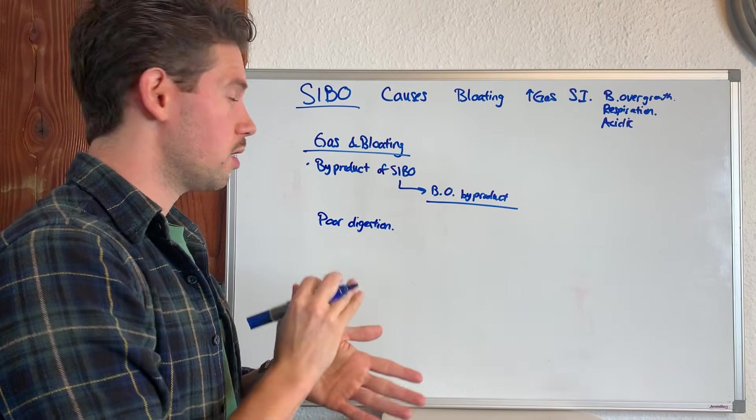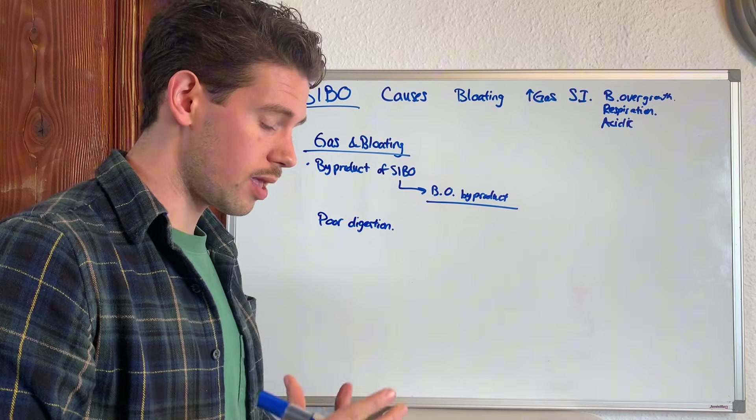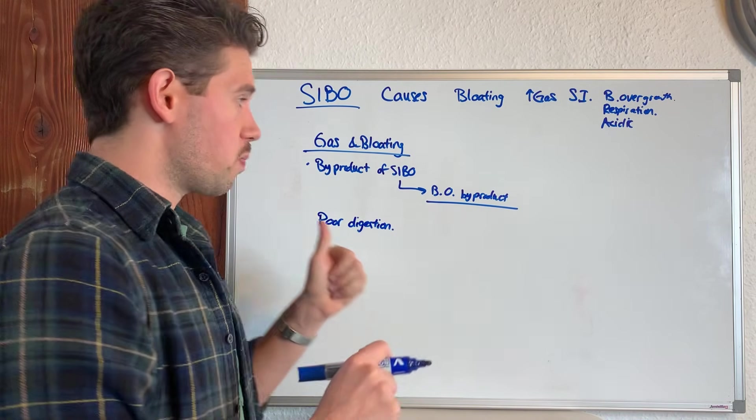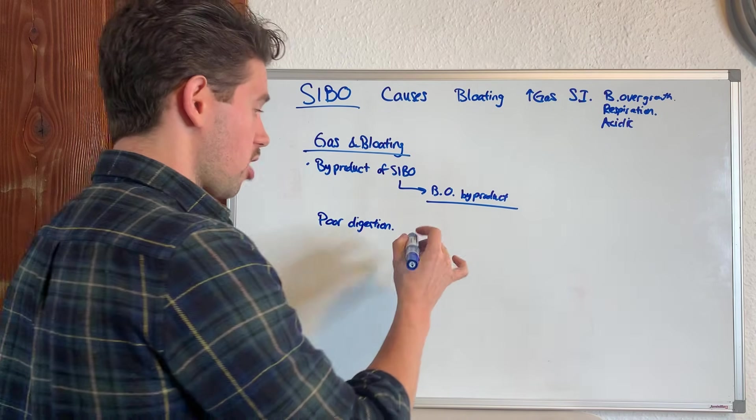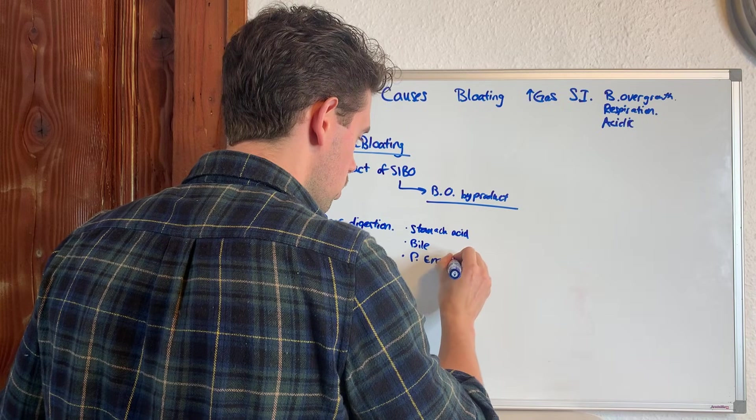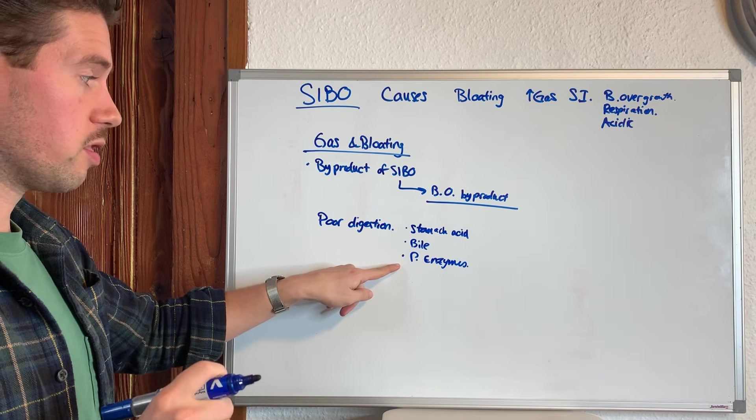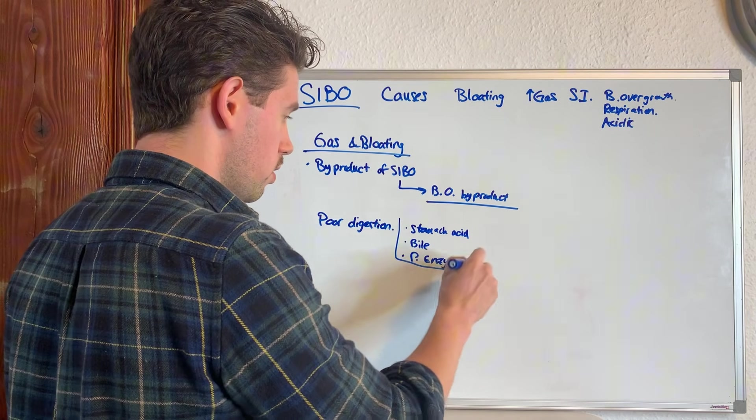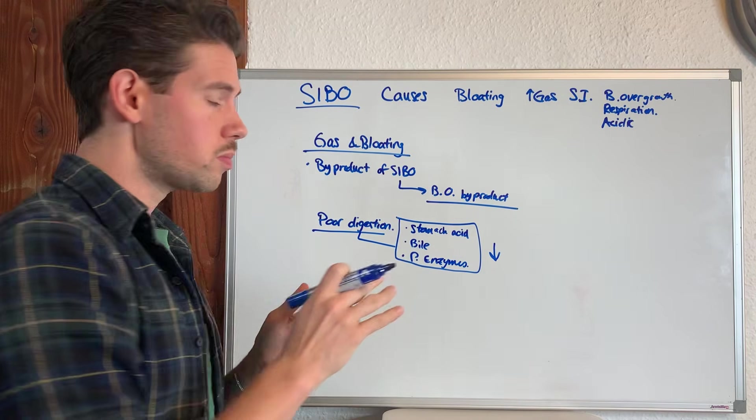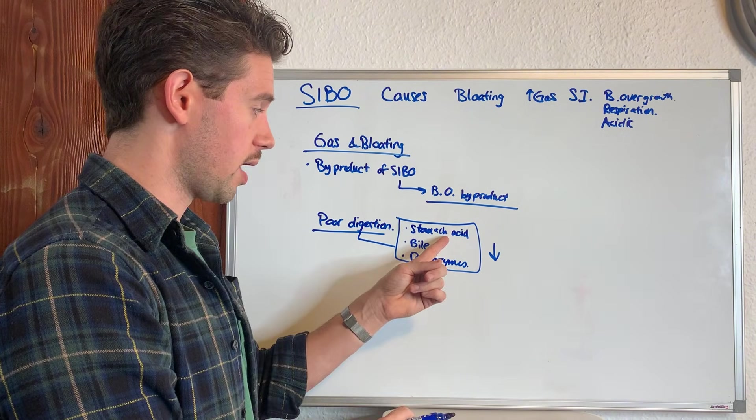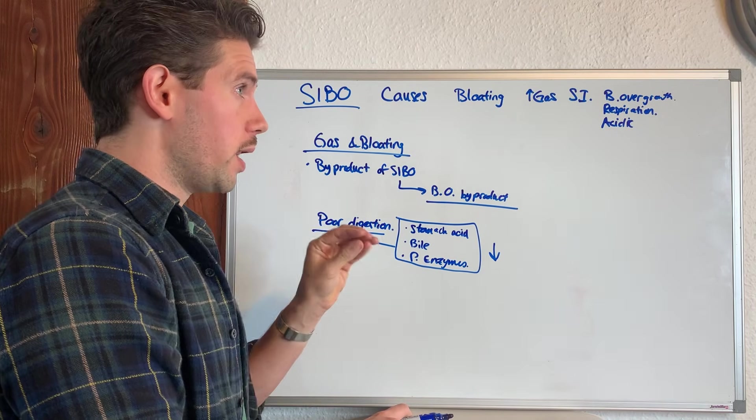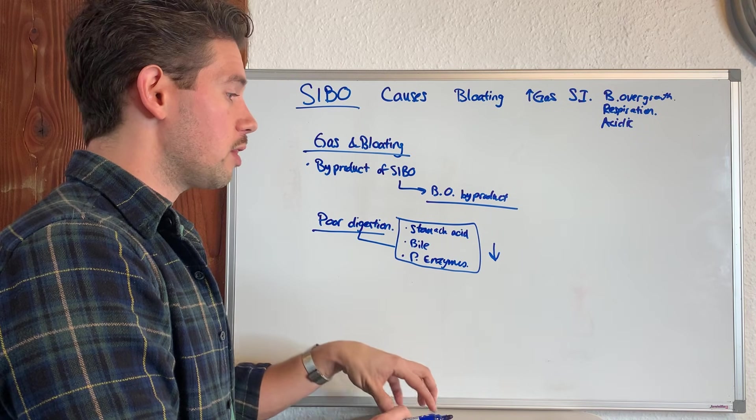People are obsessed about, and it makes sense. If you have bloating and gas, you're going to say, what can I do to address the gas? Why is the gas being produced? It's because you have poor digestion. Your stomach acid, bile, and pancreatic enzymes, these are insufficient. And so what happens is the results of these being too low, you have the results of poor digestion. And so when you have insufficient levels of stomach acid, which then has downstream effects on bile and pancreatic enzymes, another video on that later, what is the problem that it causes? It leaves the terrain open.